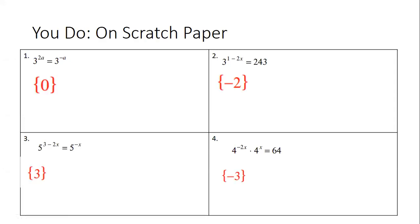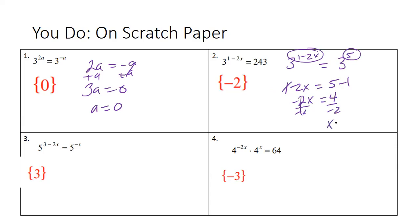These are the answers you could have gotten. On the first one, it was already prime factor. Bases were all the same. So we had 2a = -a, combined like terms. Gives me 3a = 0. So obviously, a has to be 0. Here's number two. Your prime factorization for 243 should have been 3 to the fifth power. So it should have been 3^(1-2x) = 3^5. Bases are the same. Now you just focus on the powers. 1-2x = 5. Subtract 1 from both sides. Gives you -2x = 4. Divide by negative 2. You should have gotten x = -2.